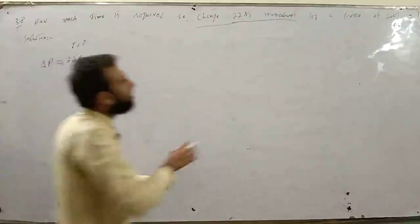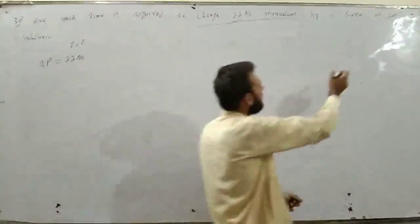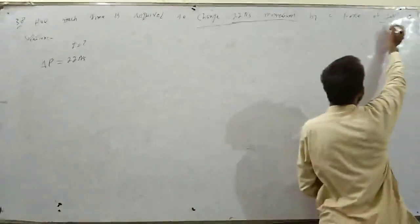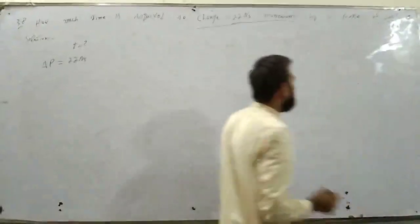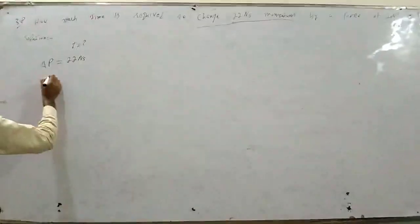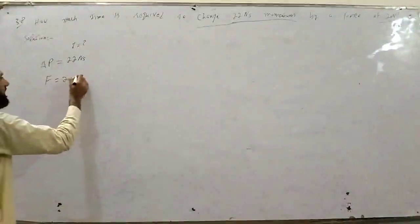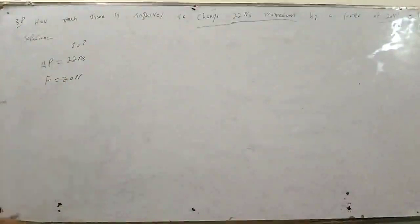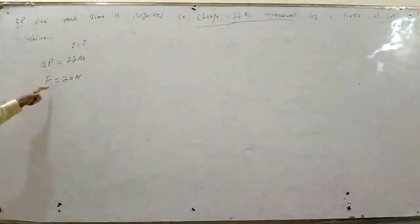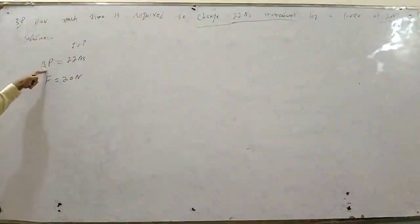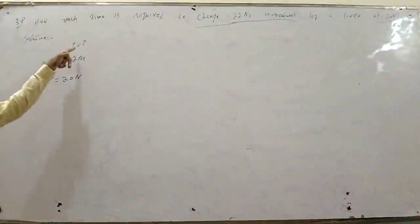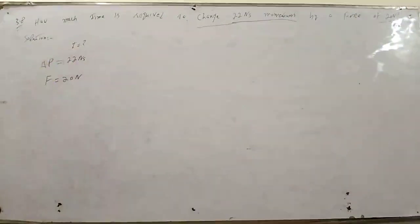By a force of 20 newton - force भी दे दी। F is equal to 20 newton। Momentum भी दिया हुआ, force भी दिया हुआ, change in momentum दिया हुआ, साथ force दिया हुआ - time find करना है।